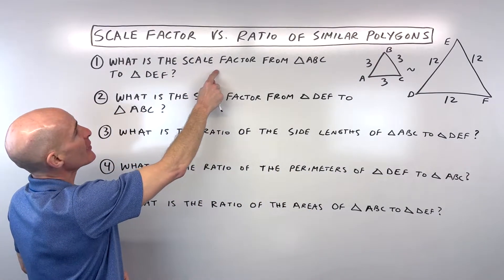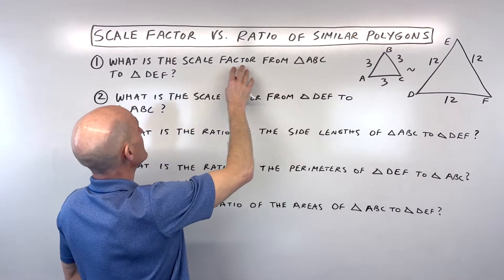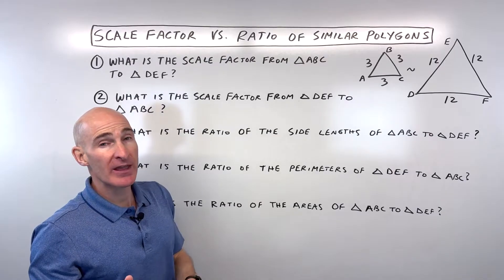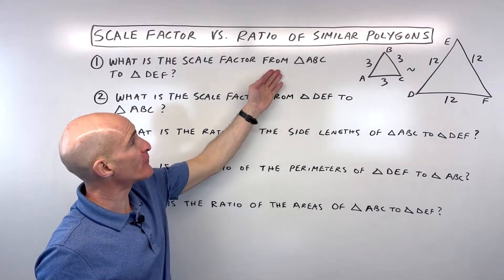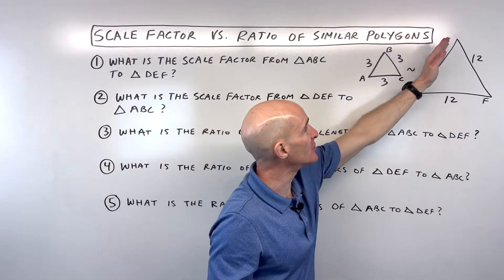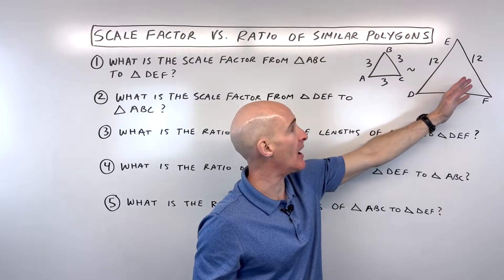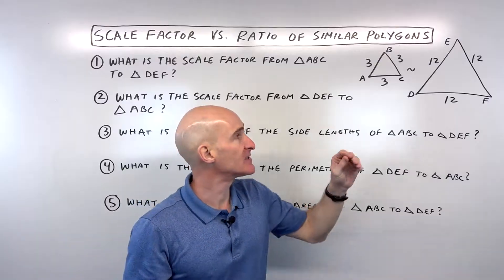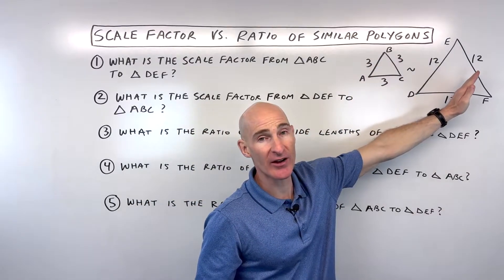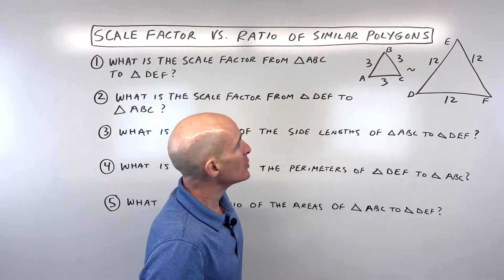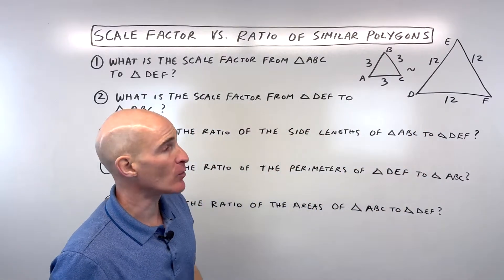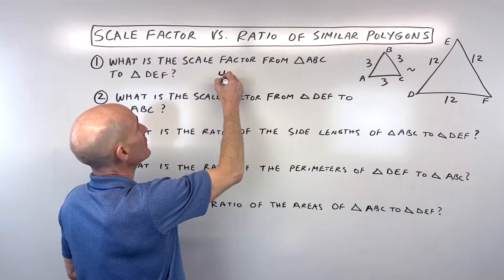It says, what is the scale factor from triangle ABC to triangle DEF? Now, you want to pay careful attention to that language, from triangle ABC to triangle DEF. The scale factor means what are we multiplying by to get from this triangle to this triangle, right? Well, you can see that we're multiplying by 4. So that scale factor, what we're scaling it by, is going to be 4.